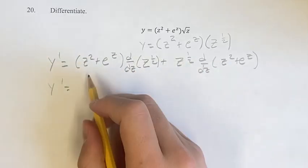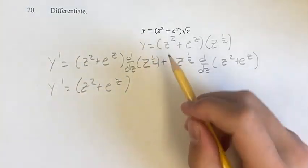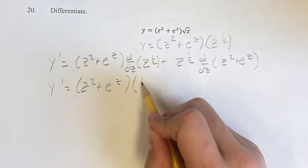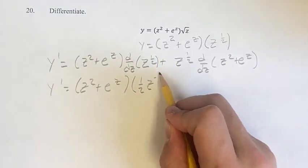First, calculating these derivatives, keeping this term the same, the derivative of this power function, you bring down to the exponent, and then your new exponent is the old one minus one, so one-half minus one is negative one-half.